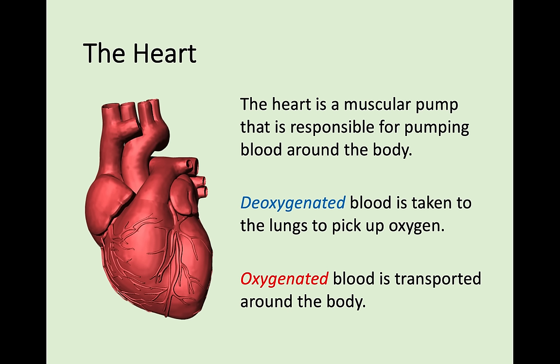The heart is something people sometimes find quite difficult, so play this back a few times and take some notes. The heart is a muscular pump and it pumps blood around the body. Deoxygenated blood is taken to the lungs because deoxygenated blood does not have any oxygen - it needs to refuel with oxygen. Once that deoxygenated blood has oxygen it becomes oxygenated, and then that oxygenated blood is transported around the body so the rest of the body can get that oxygen.